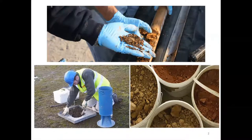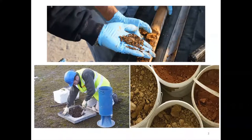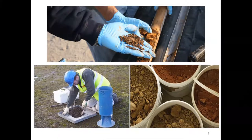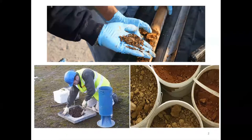Burj Khalifa has gone for a piled raft foundation — a combination of shallow and deep foundation — because there is no good hard rock strata on which you can rest your piles. The foundation is 50 meters deep. For a typical two- or three-storied house, the foundation doesn't go deeper than about 6 feet or 2 meters, because the structural load is much less. But you still cannot construct your house just on the ground surface.